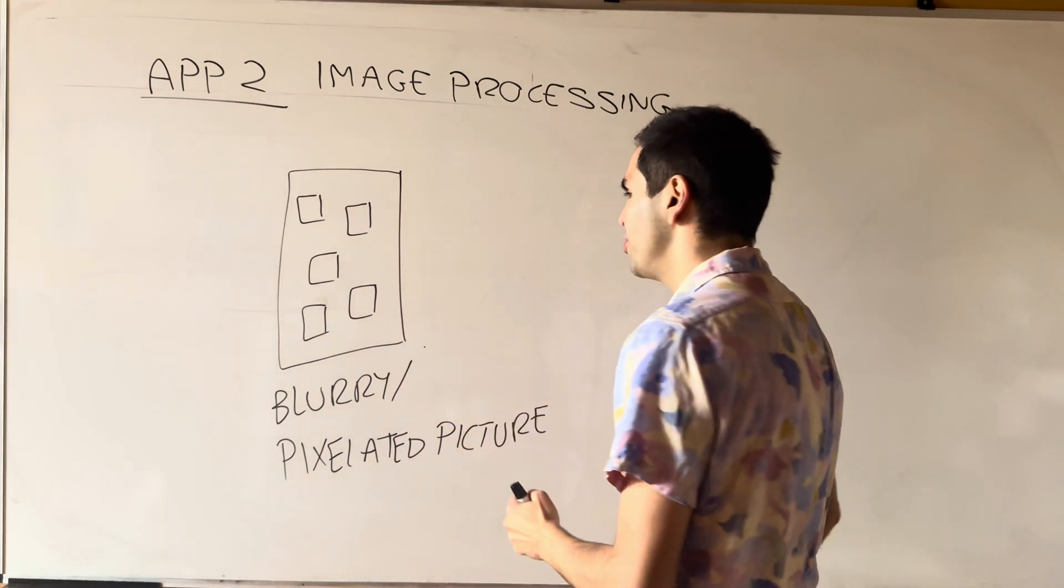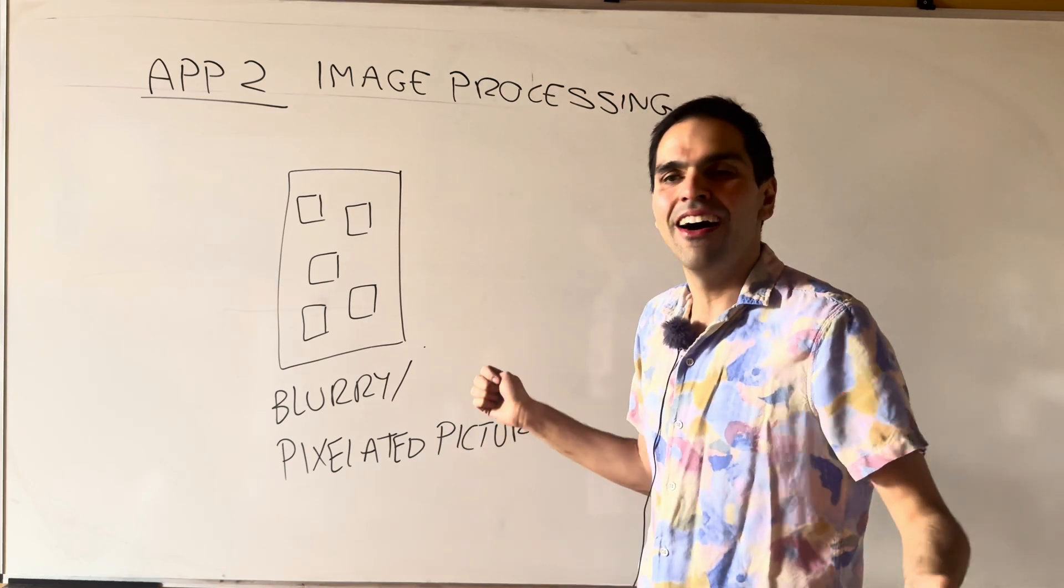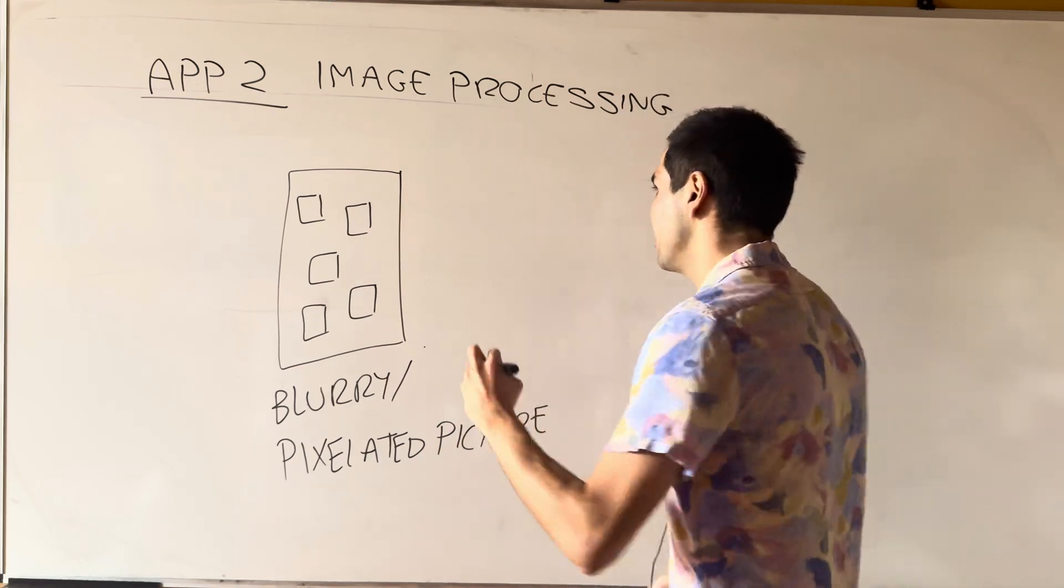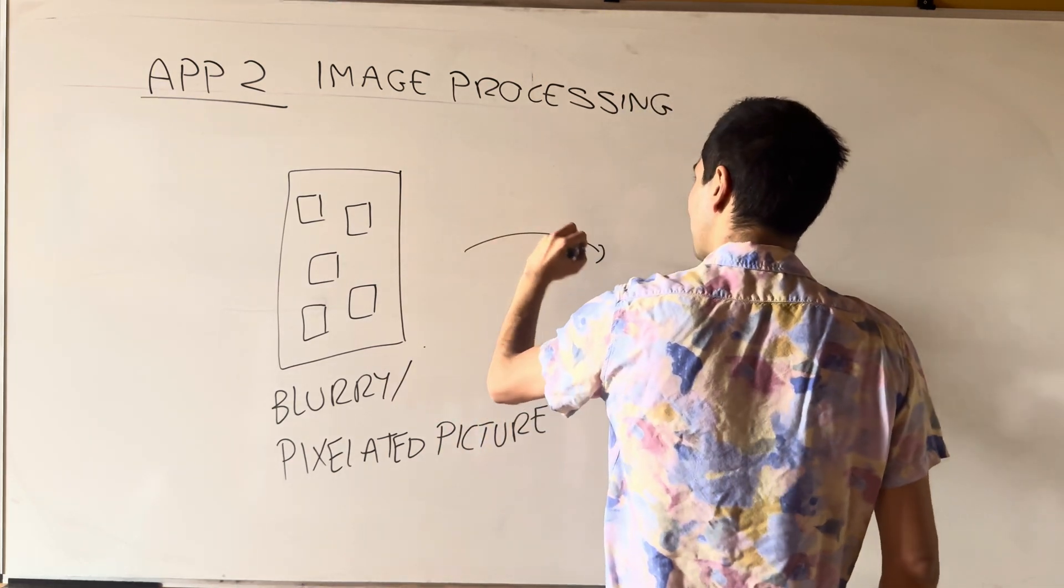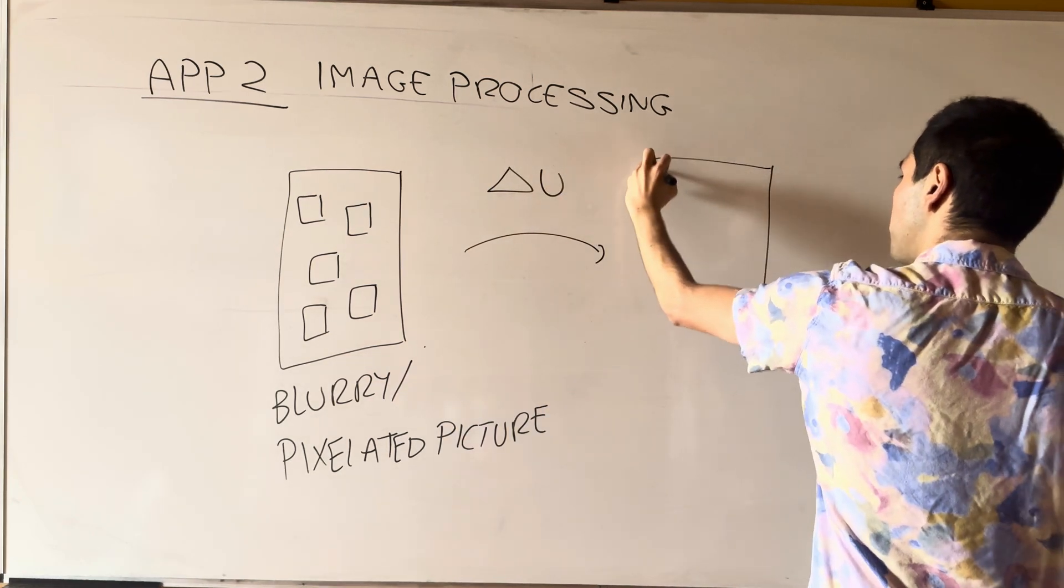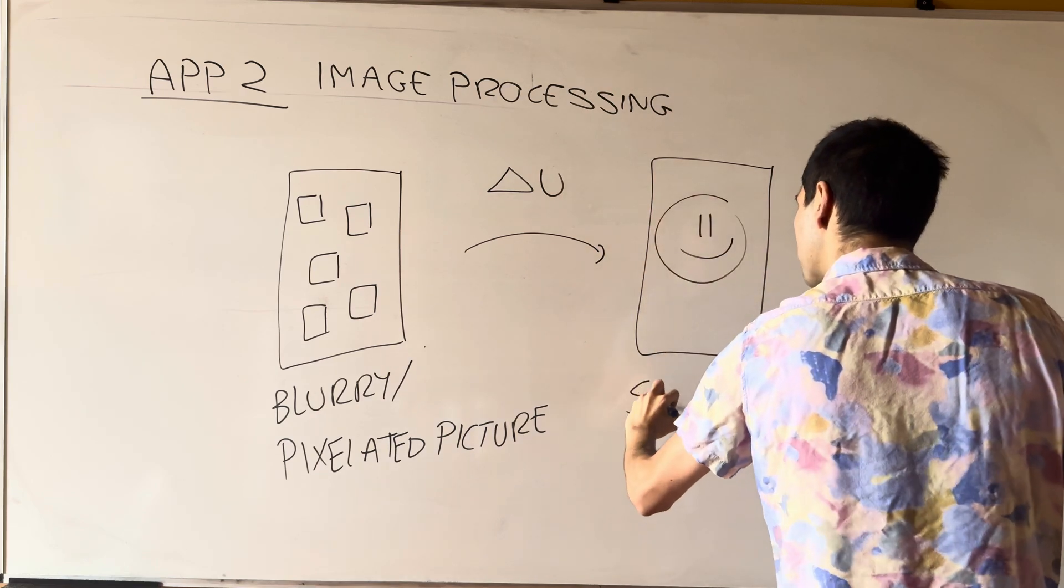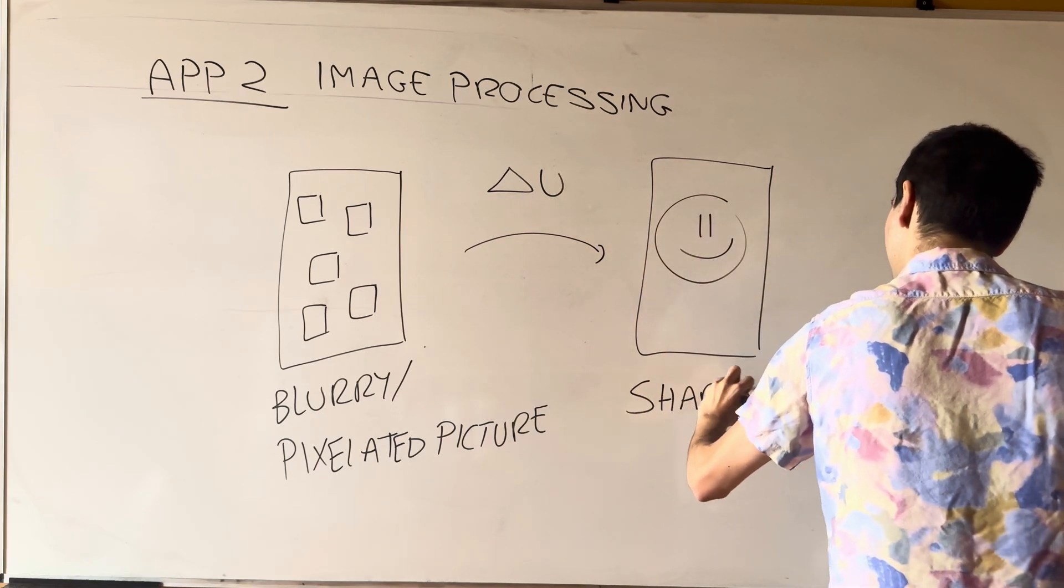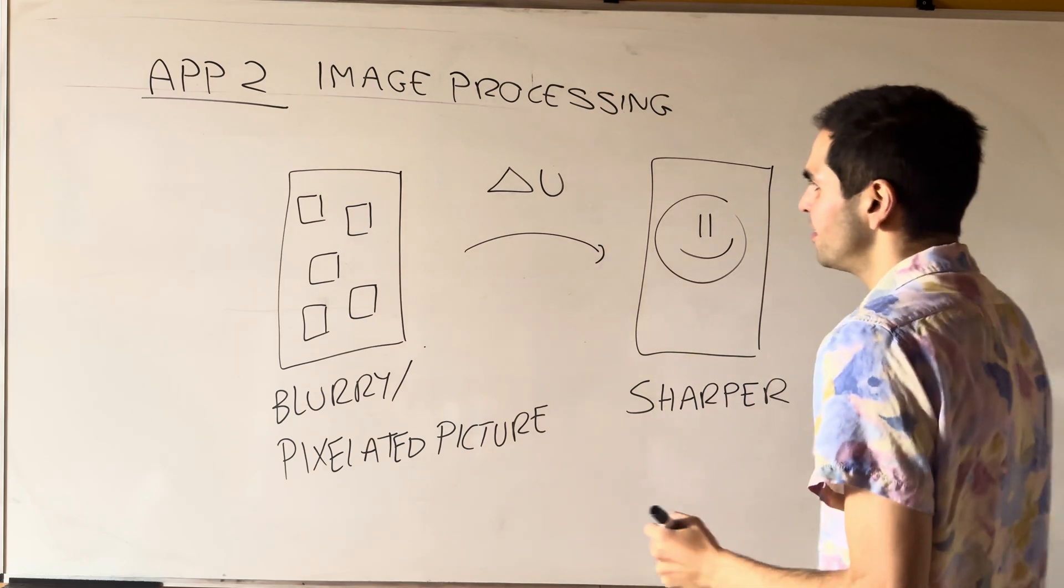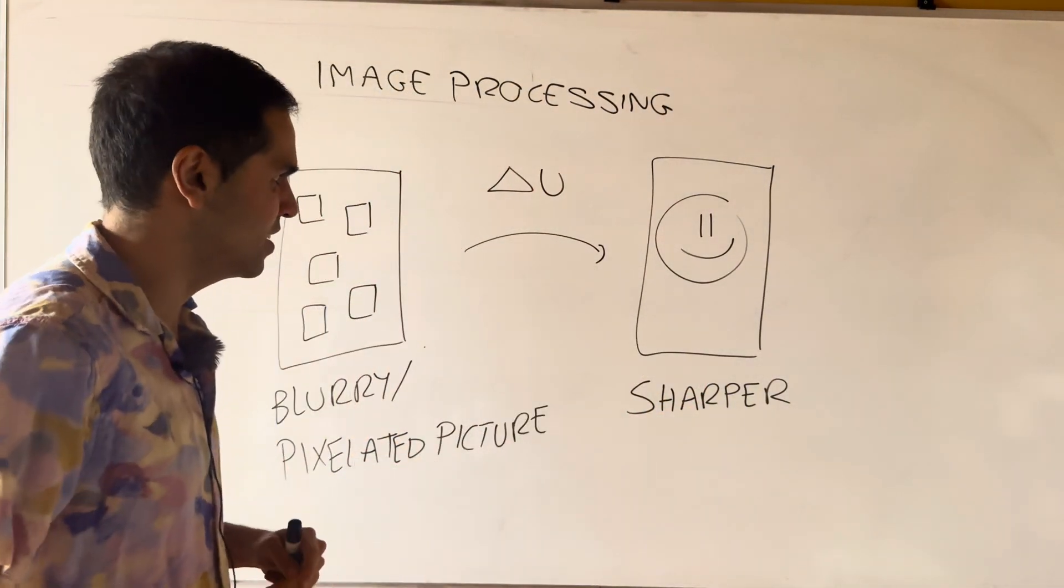So think when you use, for instance, Microsoft Paint and you just zoom in a lot, then you see lots of pixels. Then Laplace's equation actually helps us to make that picture way more sharp, technically not Laplace's equation, but its companion Poisson's equation.